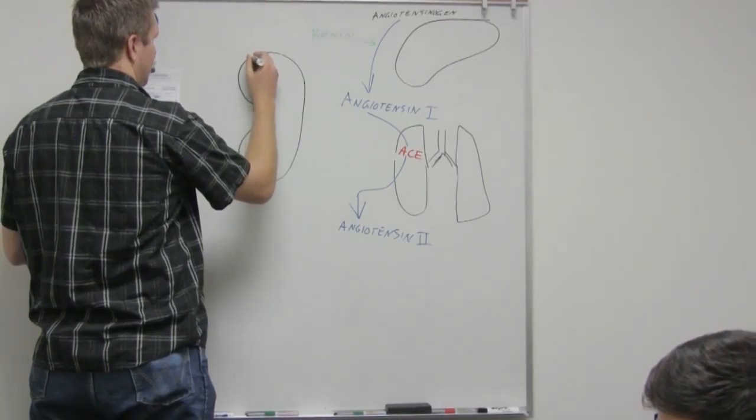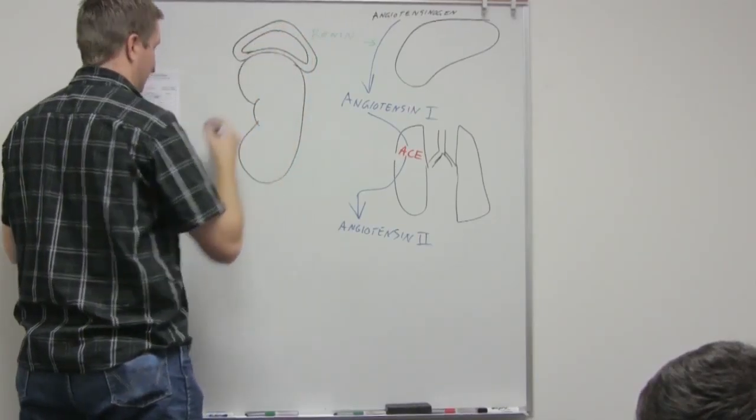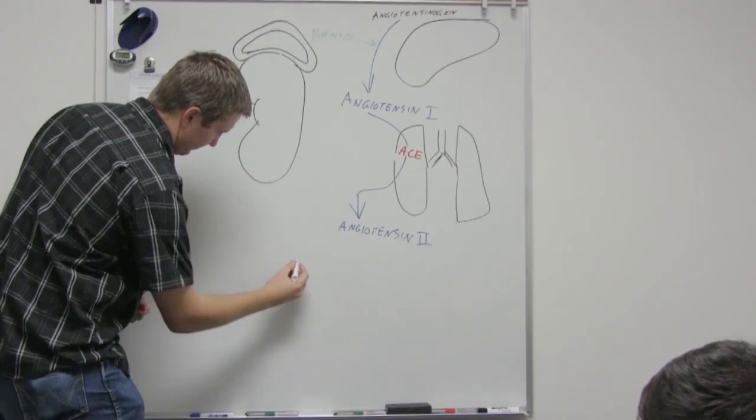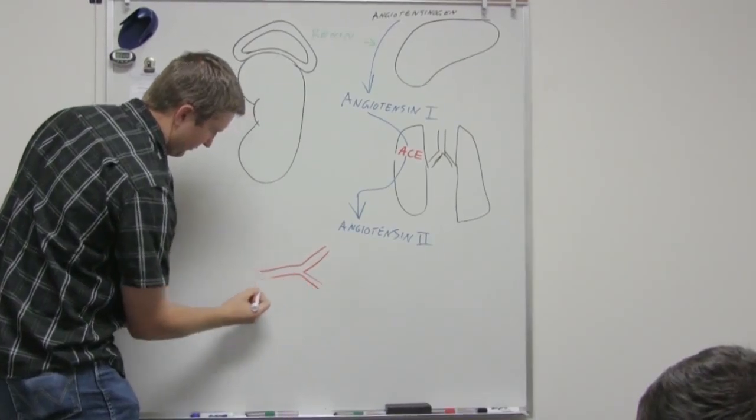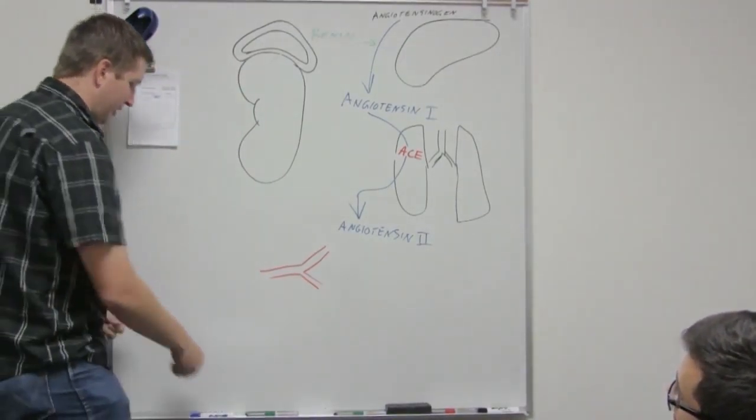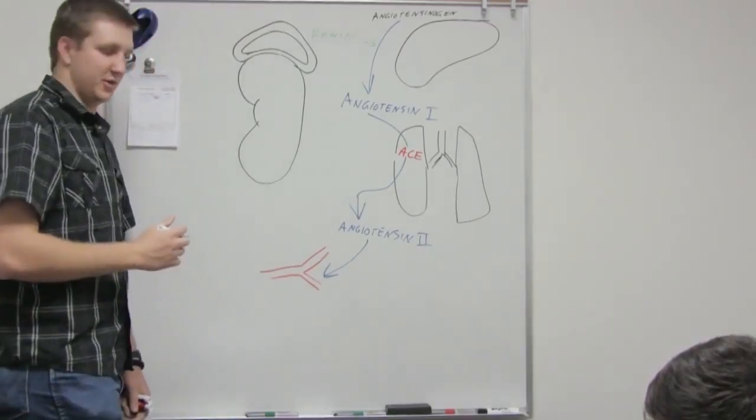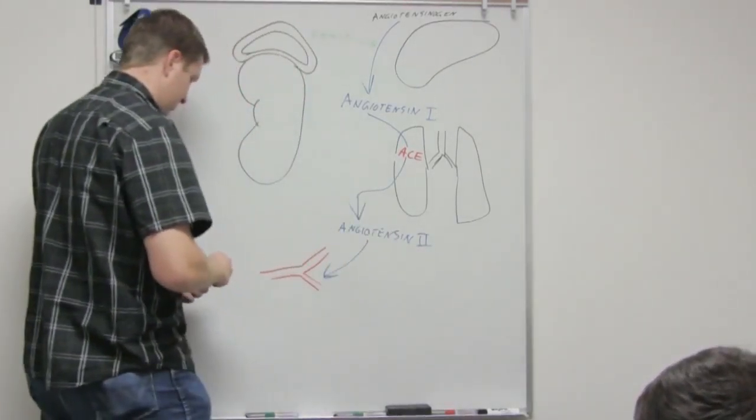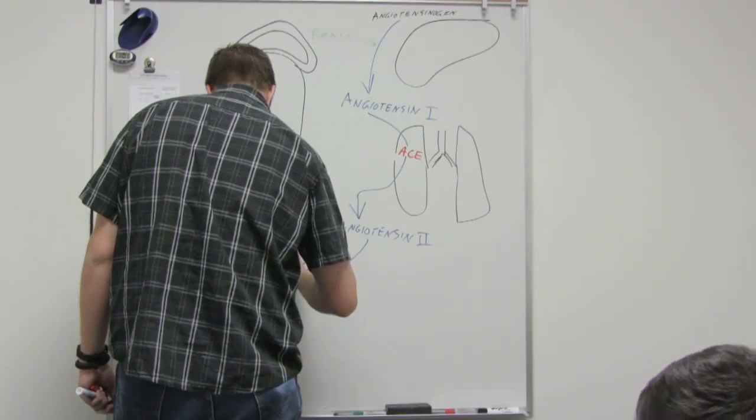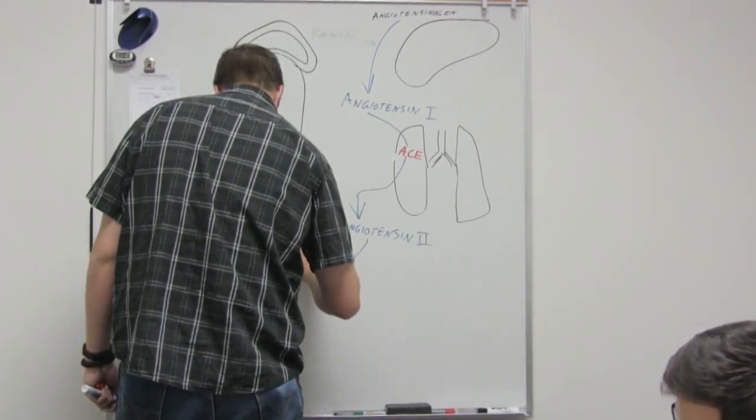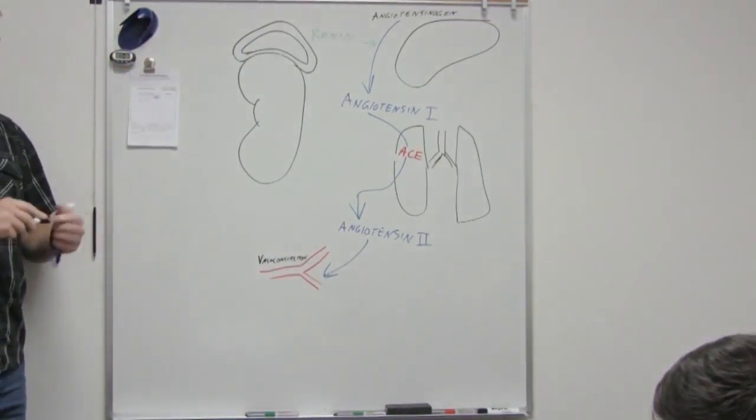So there's two things that this is going to affect, one is the adrenal cortex, the other is our blood vessels. Beautiful blood vessels. So angiotensin two causes the blood vessels to constrict. Yep, so we get some vasoconstriction.